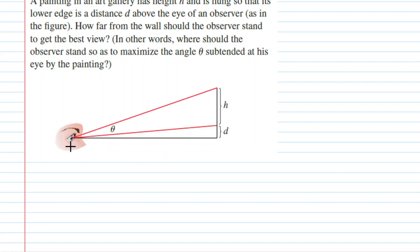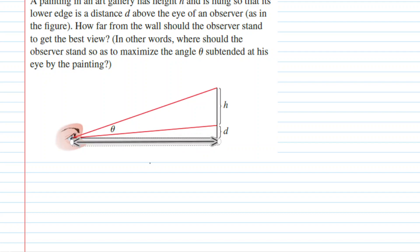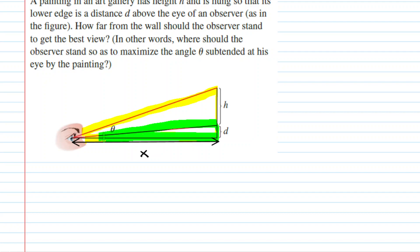The first thing we want to do is label the distance between the viewer and the wall as X. After doing so, we want to look at two right triangles. There is a larger right triangle that we will outline in yellow, and then there is the smaller right triangle which we will outline in green. Let's go ahead and redraw those two right triangles.